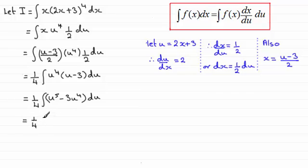So we've got one quarter multiplied by u to the power 6. If I integrate u to the power 5, that'll be u to the power 6 over 6. And then the integral of minus 3u to the power 4 is minus 3u to the power 5 over 5. And then if I close the bracket and put the constant of integration plus c. Now the best thing that you can do in situations like this is not to just rush in and substitute u back in as 2x plus 3. It's much better if you clean this up at this stage. You've got less work to do.